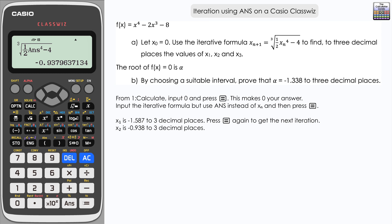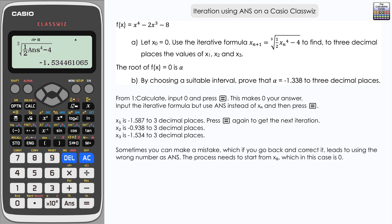If we press equals one more time, we get the third iteration: negative 1.534 to three decimal places. Three iterations for part a. Now what sometimes happens is you can make a mistake in terms of inputting your iterative formula, particularly if it's more complex than this one. The problem is then your answer has changed. Currently we have the answer negative 1.534.